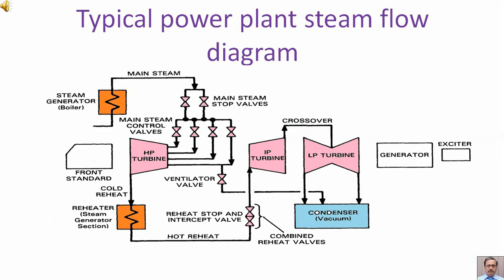Typical power plant steam flow diagram. Here we can see the steam generator, that is the boiler, then we have the turbine, and then we have the third important component, the generator.